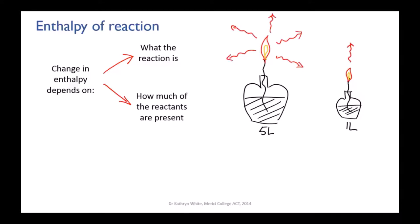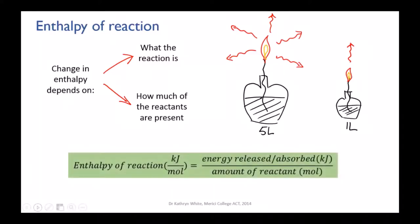So when we talk about enthalpies, we need to take into account how much of the reactants have been used. The way we express the enthalpy for a particular reaction is like this: the change in enthalpy, with units of kilojoules per mole, equals the amount of energy that's been either released or absorbed, measured in kilojoules, divided by the amount of reactant in moles.